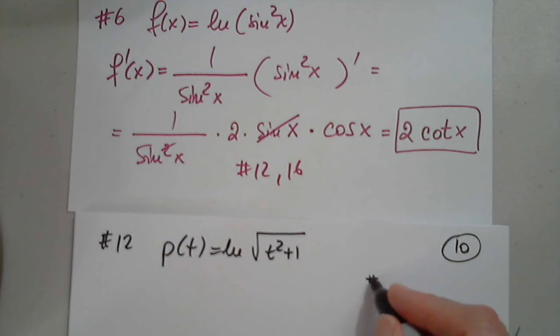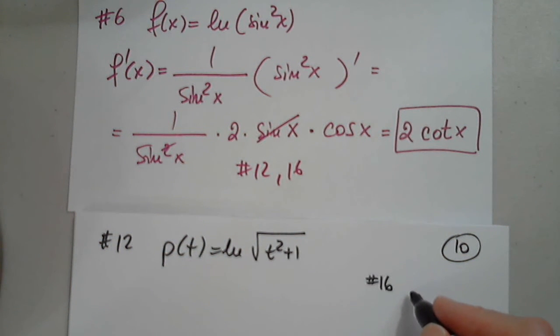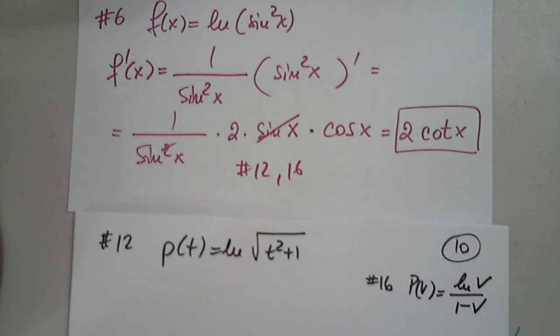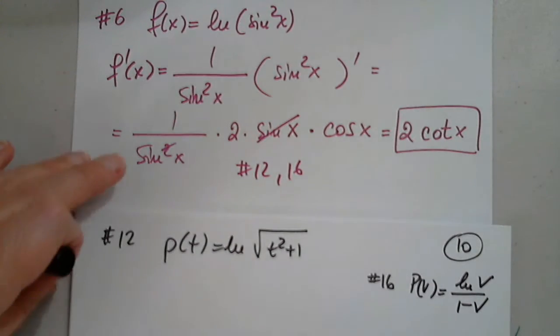What was 16? p of v equals natural log of v over 1 minus v.